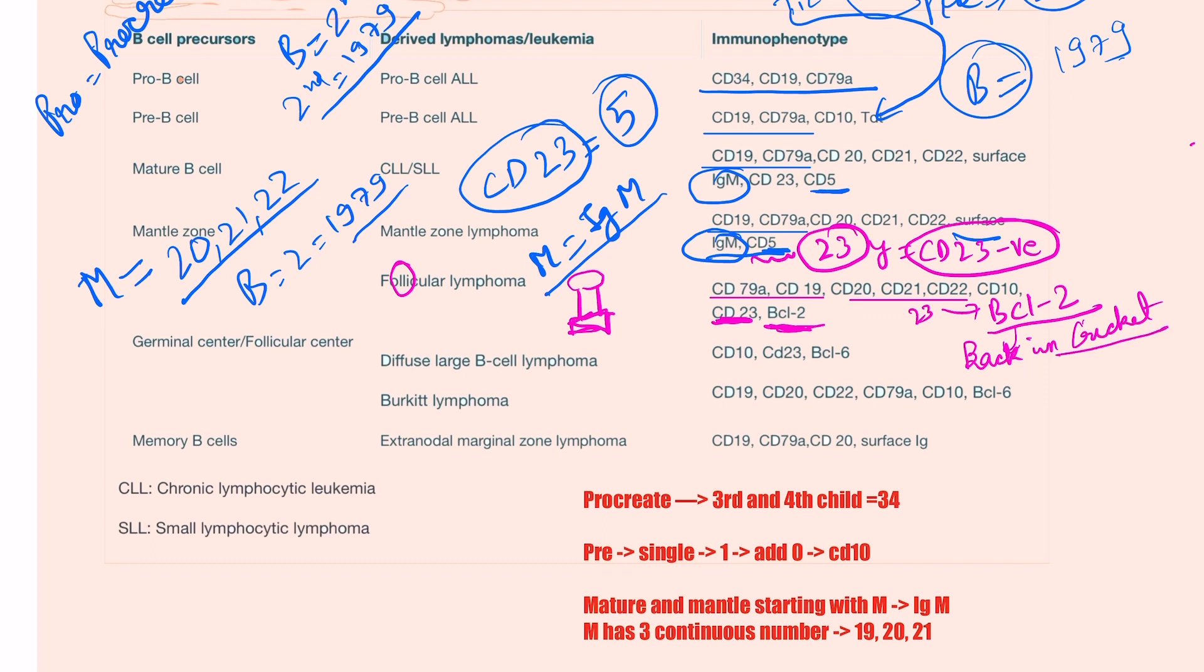Now we move on to the germinal center diffuse large B-cell lymphoma. It is very simple. Diffuse large B-cell lymphoma is composed of five letters, and we have to remember this in ascending order. Like we have to write one, two, three, just skip the four, five is the DLBCL thing, and then six. So one, we will add 0, so CD10, CD23, DLBCL will become five, two, two, three, and then six is BCL6. So diffuse large B-cell lymphoma, because it is so much large that we have to count the number till six.